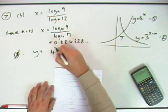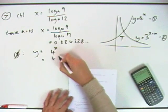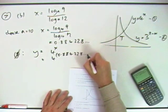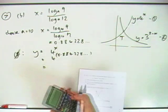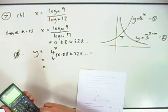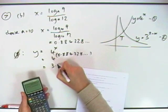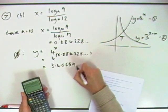y is going to be 4 to the power x, so it's going to be 4 to the power 0.884228, and so on, which I've still got in the answer function, so I'll just do that. 4 to the power answer is 3.40689, blah blah blah.